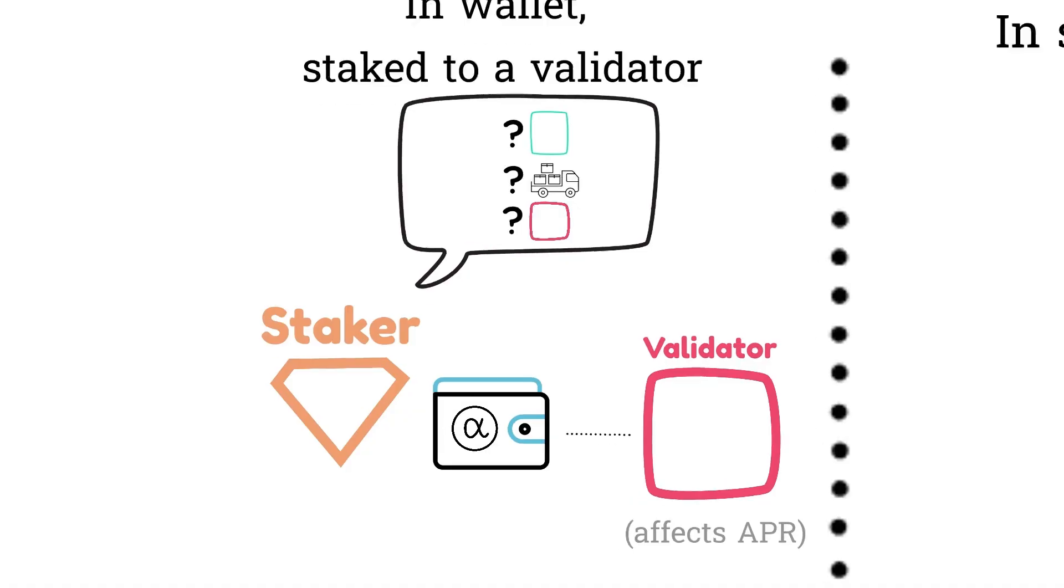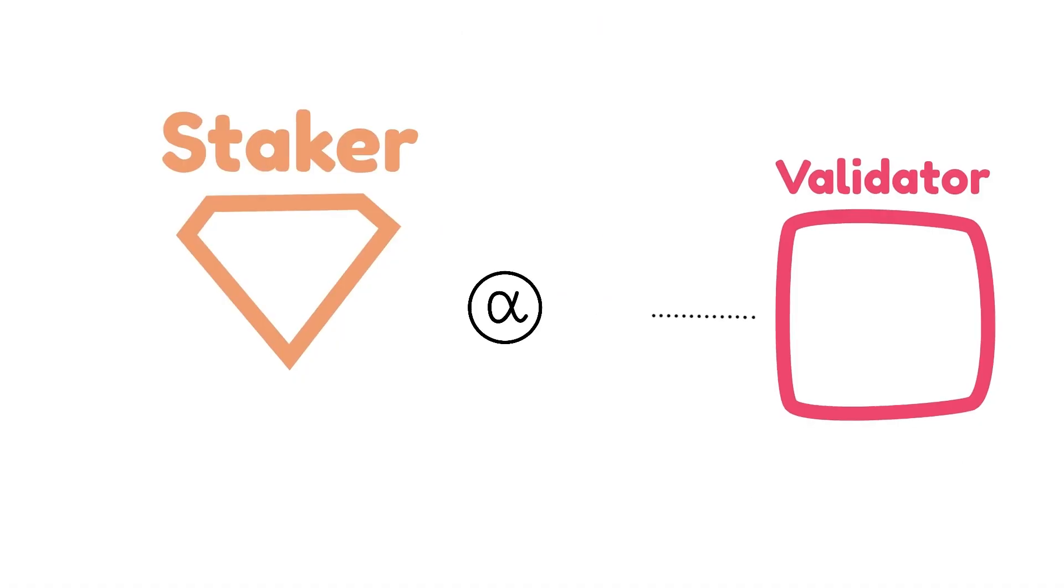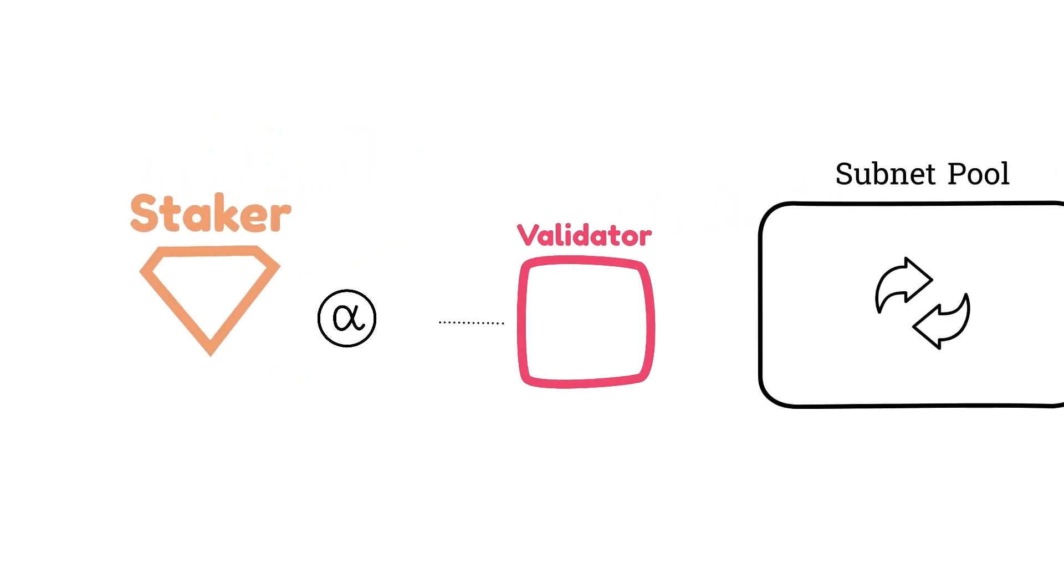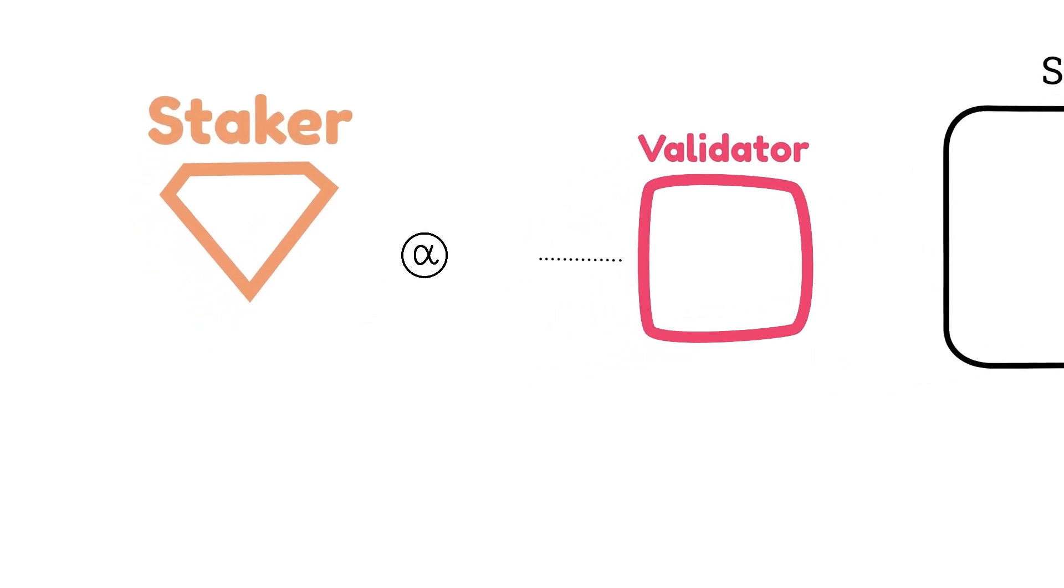While alpha is in your wallet staked to a validator, you will receive dividends in that alpha token. By default, you can only do two things with your alpha. It can be traded for Tau at the current market rate via a subnet pool, or it can be staked to a different validator.